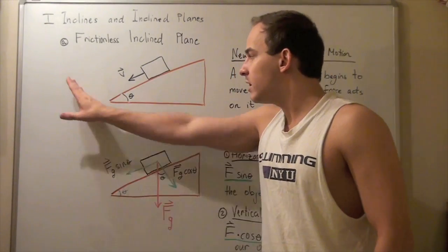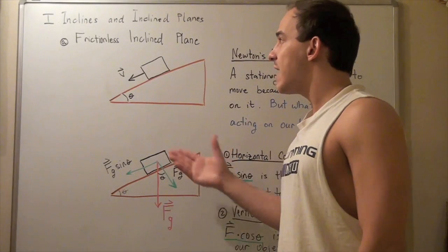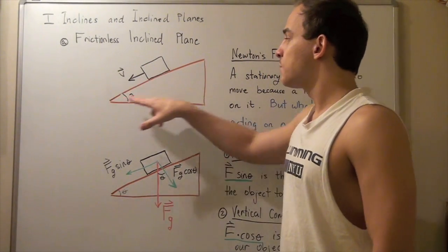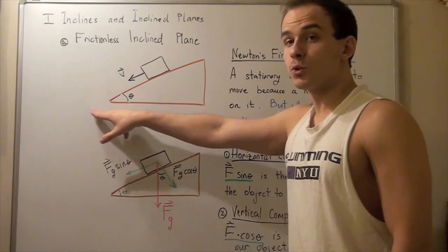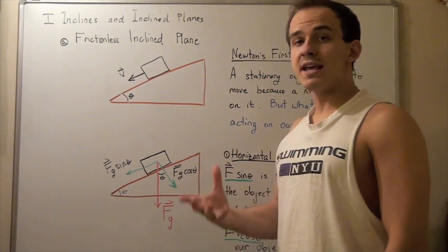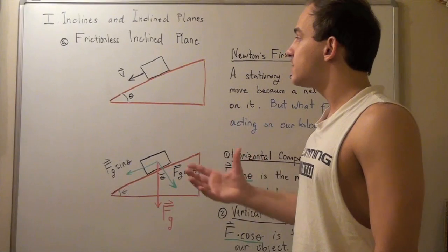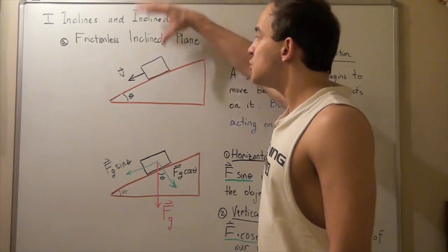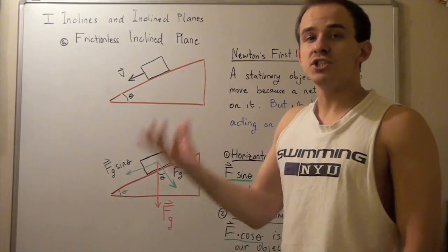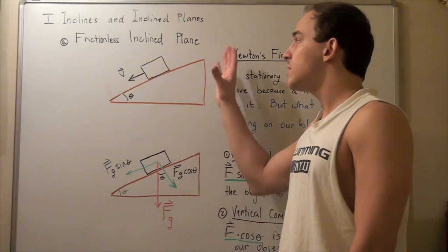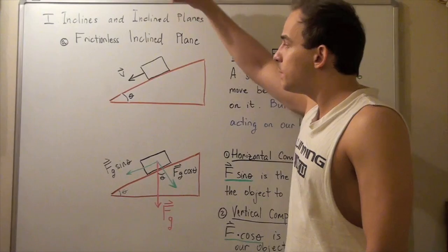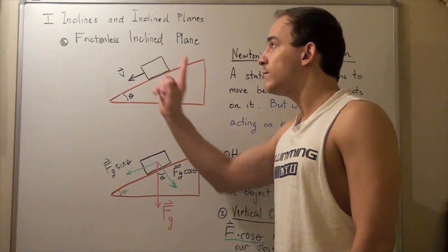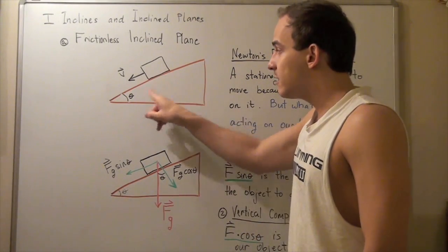Let's begin by looking at the following illustration. Suppose we have a frictionless inclined plane with some angle theta to our horizontal ground. Suppose we take some rectangular block and place this block on our inclined plane. Notice when we initially place the block, we place the block stationary — we don't give it a push upward or downward. So, what happens if our block is indeed on a frictionless surface at angle theta?